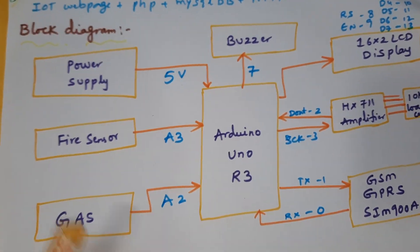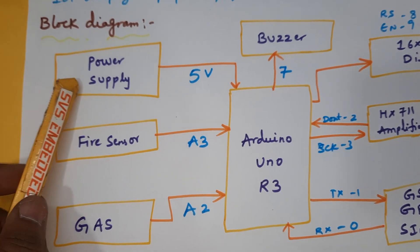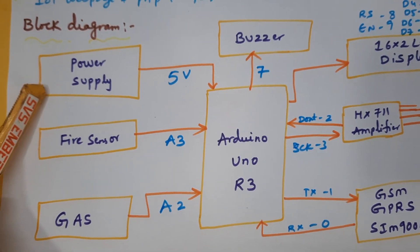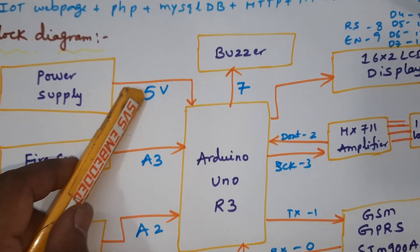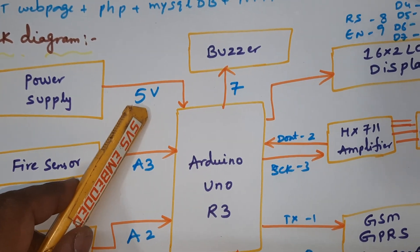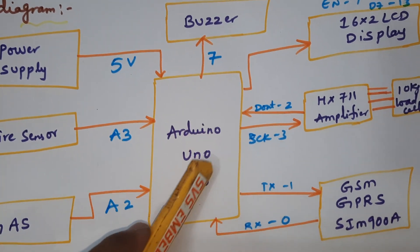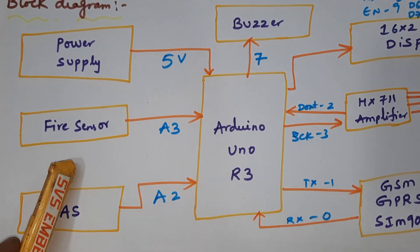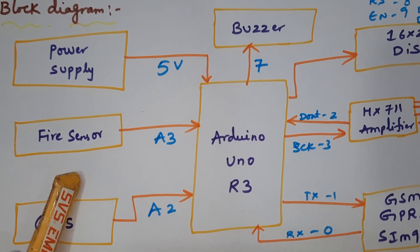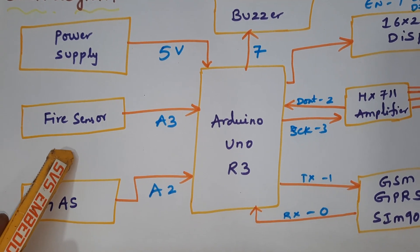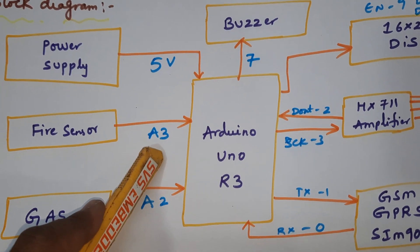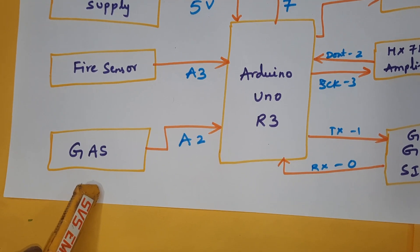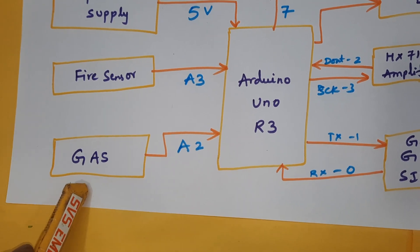In the block diagram, we are using a 0 to 9 volts adapter as the power source. It converts to 5 volts pure DC output and supplies the Arduino Uno R3 board. We are using one fire sensor — a fire analog sensor — connected to analog pin A3, and an LPG gas detection sensor, the MQ2 gas sensor.